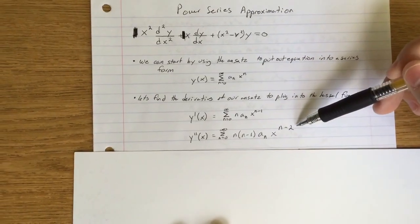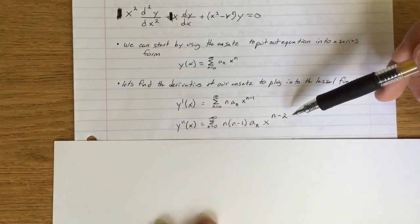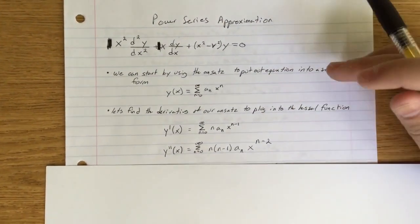Having these n minus 1's and n minus 2's is going to be very important for putting it into a constant x value term later.